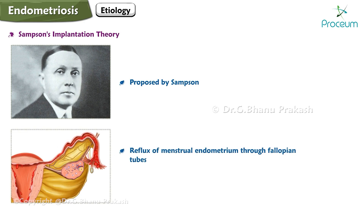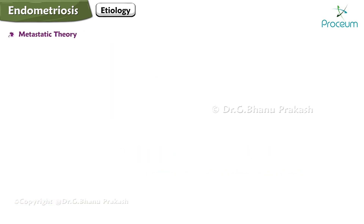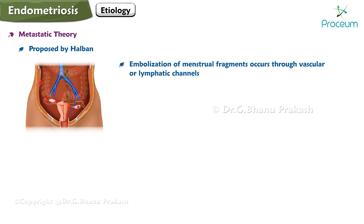Following reflux, the endometrium gets implanted and grows on the pelvic peritoneum and surrounding structures. The metastatic theory, proposed by Halban, suggests that embolization of menstrual fragments occurs through vascular or lymphatic channels, leading to the development of endometriosis.